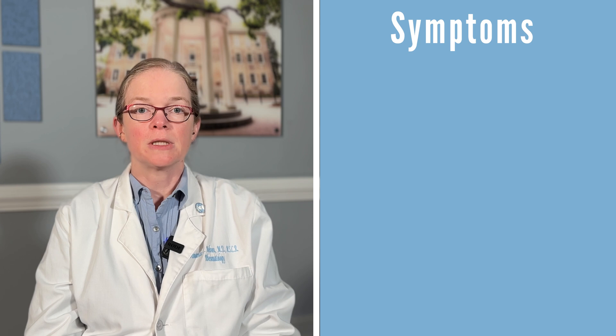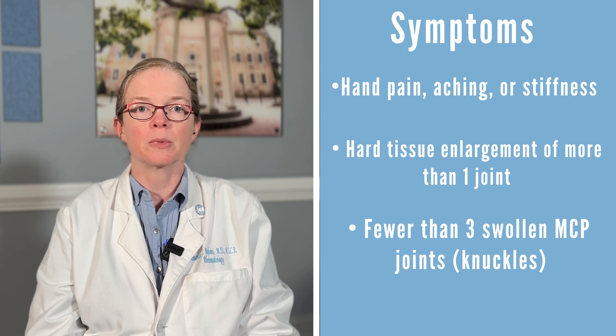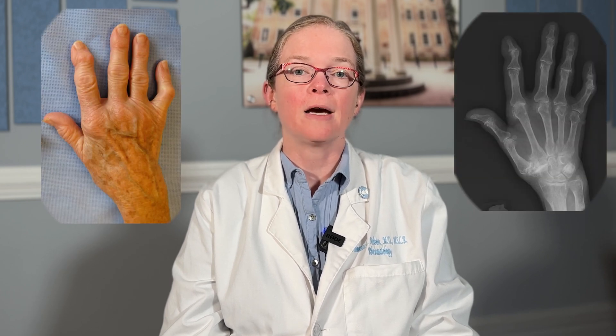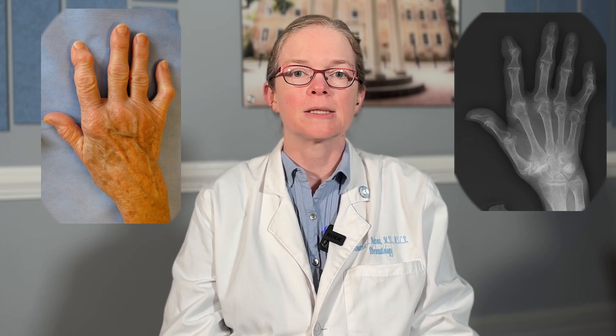Hand osteoarthritis is a very common cause of hand pain and itself is very common. It can be described in terms of symptoms, which are often pain, aching, or stiffness, and also radiographic features of hand osteoarthritis, which include bone spurs and loss of joint space. Depending on how it's defined, it can be incredibly common. Most people over age 80 have radiographic hand osteoarthritis, or hand pain, which is very common but not always related to arthritis itself.